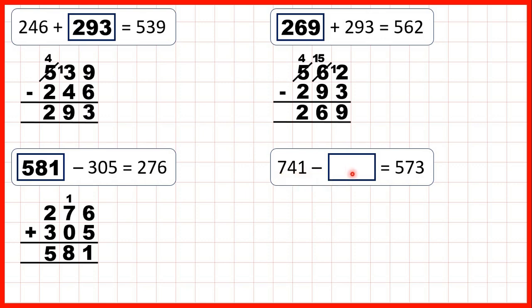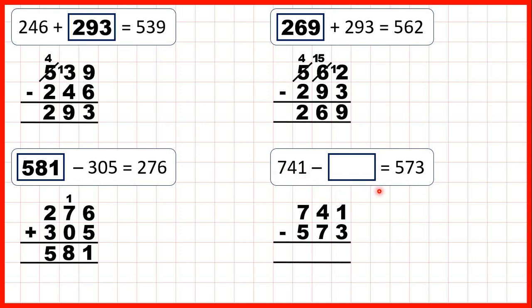741 minus something equals 573. This time it's the second number of our subtraction that's missing. When it's the second number rather than the first number that's missing, we still use subtraction to find our missing number. We can work out 741 minus 573, and that will give us our missing number. 1 minus 3 — but 3 is larger than 1, so we go to the left, 1 less, 1 in front. 11 minus 3 is 8. But now we have 3 minus 7, so again we need to exchange — go to the left, 1 less, 1 in front. 13 minus 7 is 6, and 6 minus 5 is 1. So our missing number here is 168.